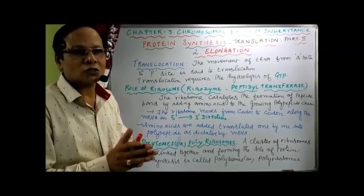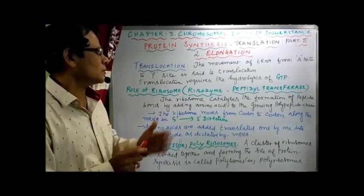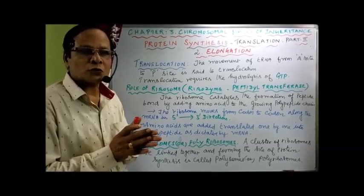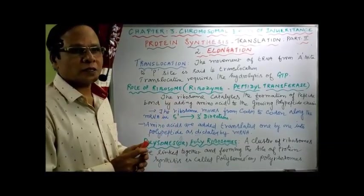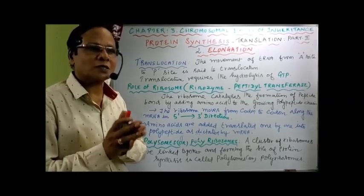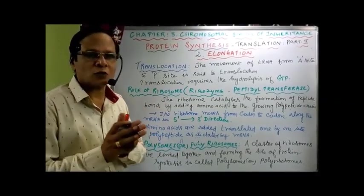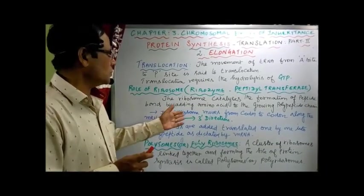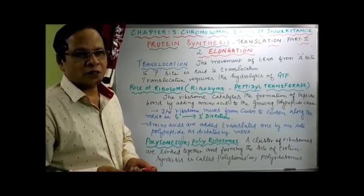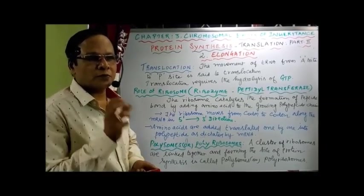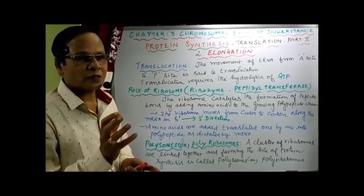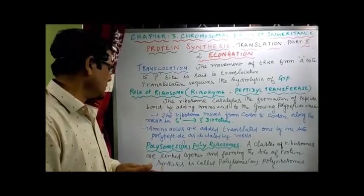The ribosome plays both a catalytic and structural role — forming the structure as well as catalyzing the formation of peptide bonds by adding amino acids to the growing polypeptide chain. The ribosome moves from one codon to another codon along the mRNA in the 5' to 3' direction. Translation always occurs in the 5' to 3' direction — whether replication, transcription, or translation, all events occur in the 5' to 3' direction. Amino acids are added and translated into a polypeptide chain as dictated by the message in the mRNA.